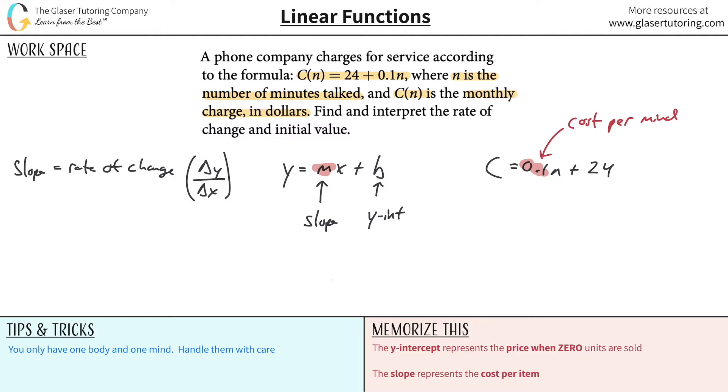Now, the other one, this is obviously now our y intercept value or the b value. And this represents the y intercept, the price when zero units are sold. So meaning when you don't talk any minutes, when you don't make any calls, you're going to be charged during that month $24. Notice, if you plug zero in for n, this whole thing just cancels. And then you're left with c is equal to 24.